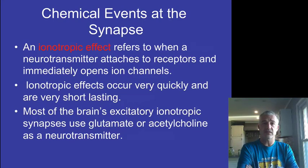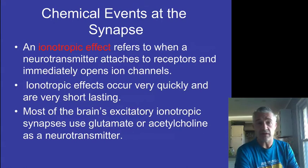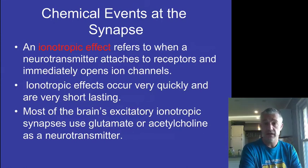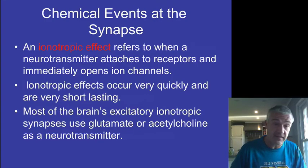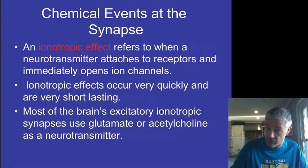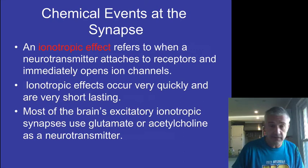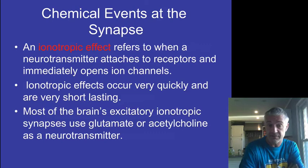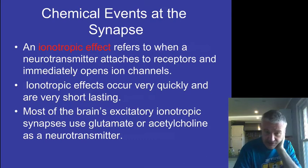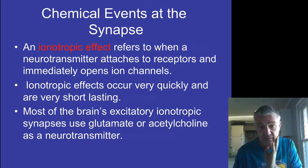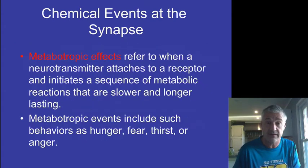Some of the changes that a neurotransmitter would bring about would be something called an ionotropic effect. This binds to receptors and actually brings about a change in which ions can flow in or out of the cell — very quick, very short lasting. A lot of what we've talked about so far has been this idea of an ionotropic type of synapse — acetylcholine at the neuromuscular junction, for example, and glutamate up in the brain.